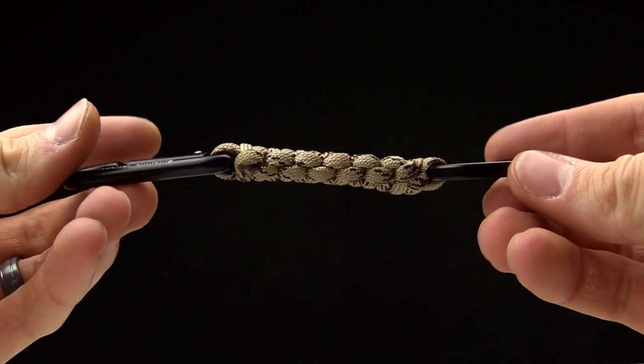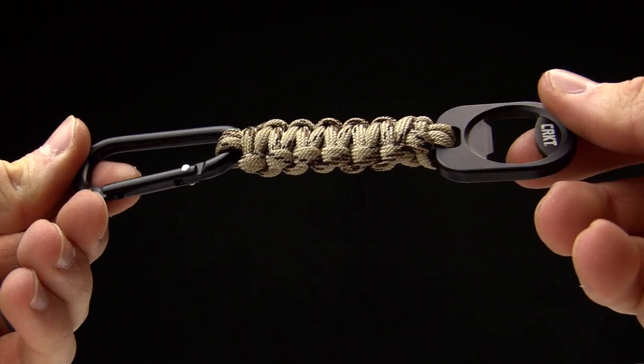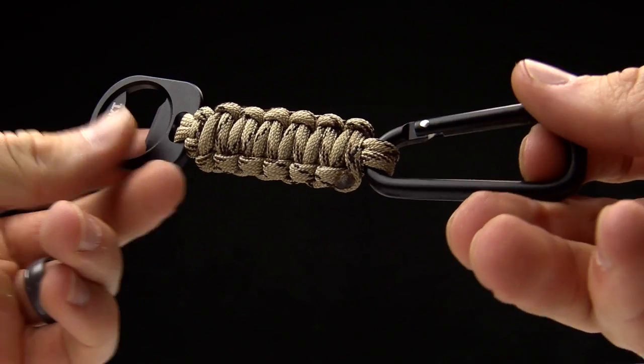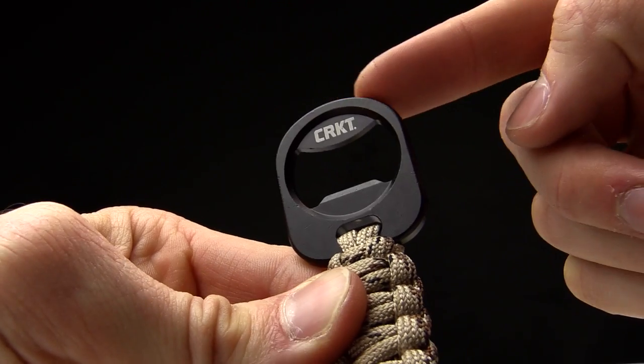Today at CRKT we are taking a look at the bottle opener paracord accessory. This is a Tom Stokes design. Basically, you've got a bottle opener on one end.